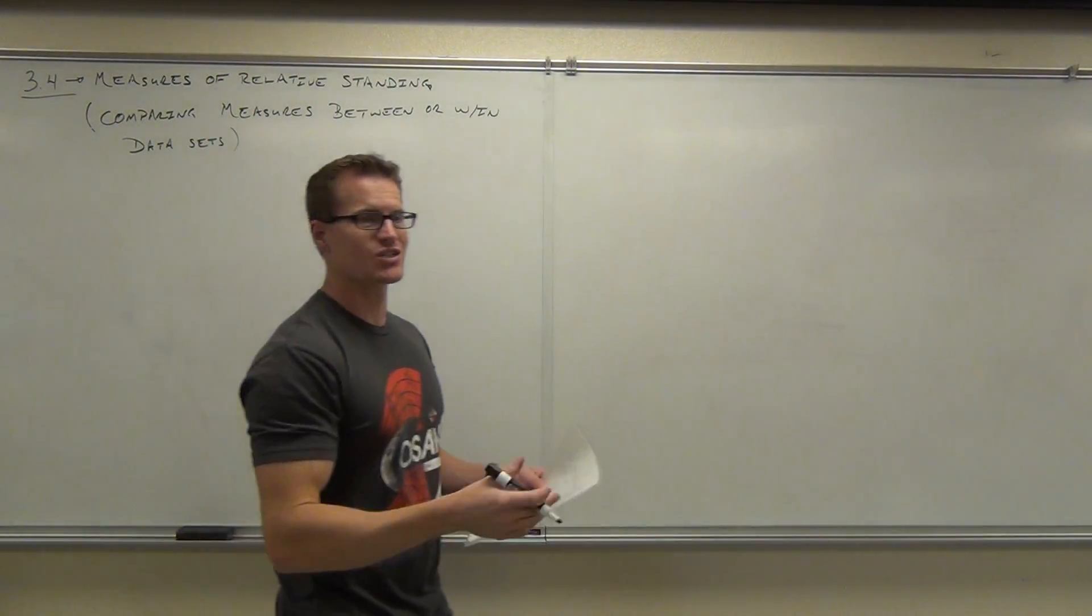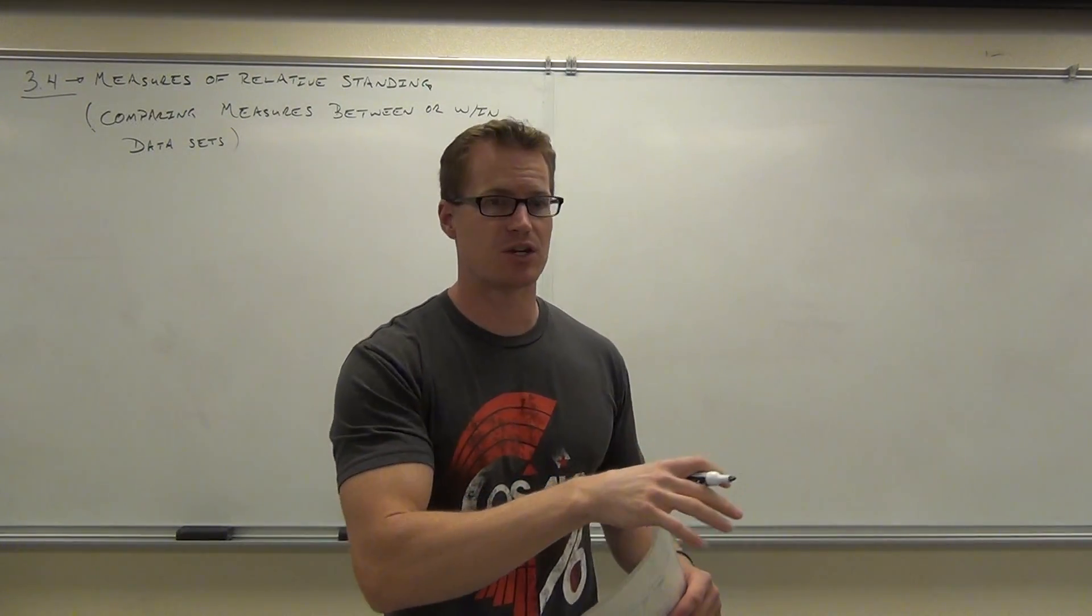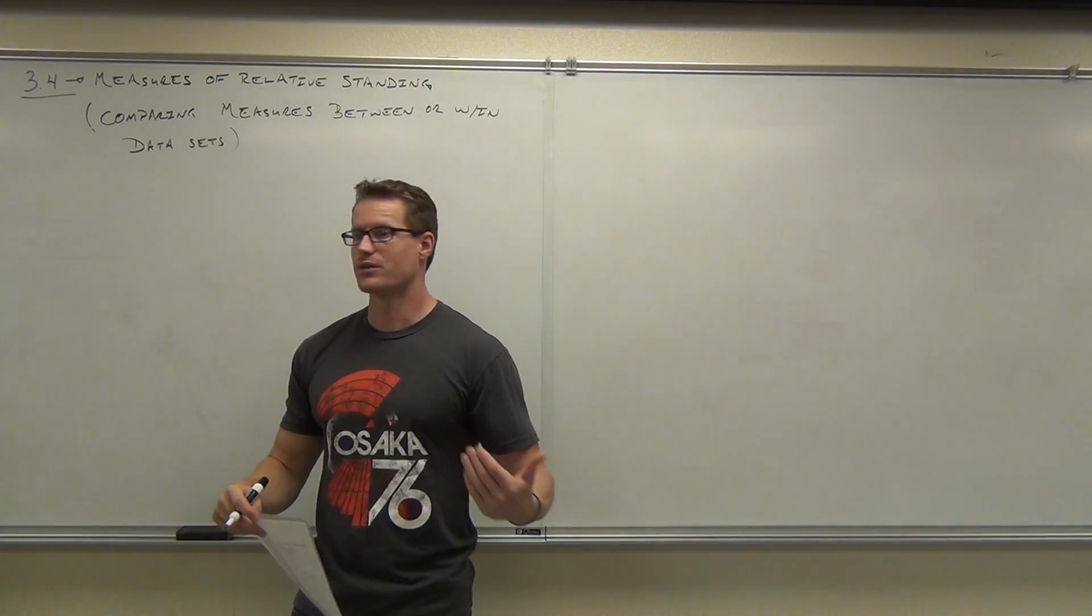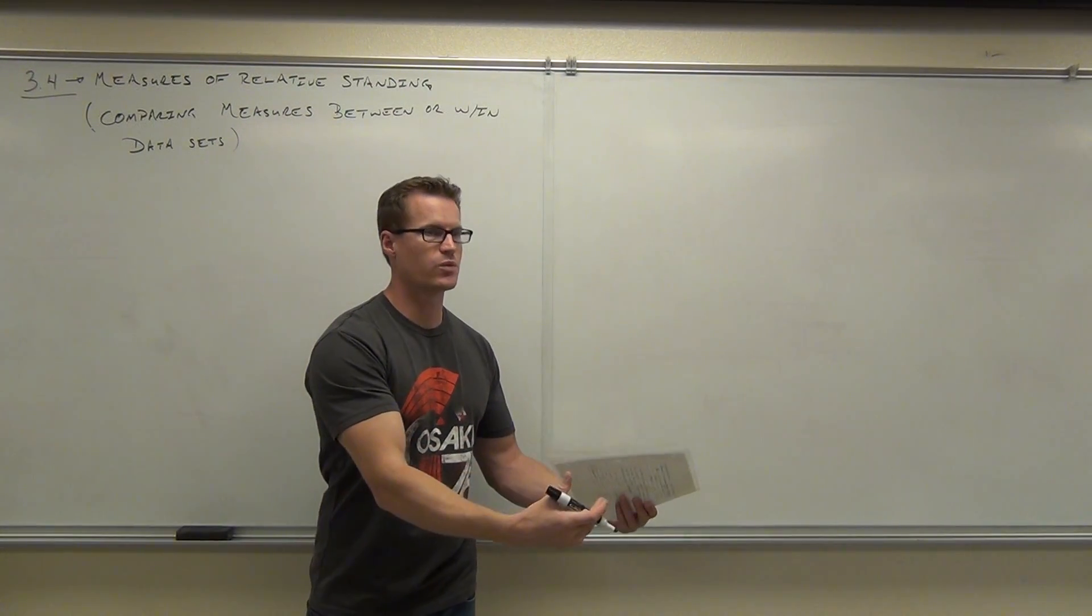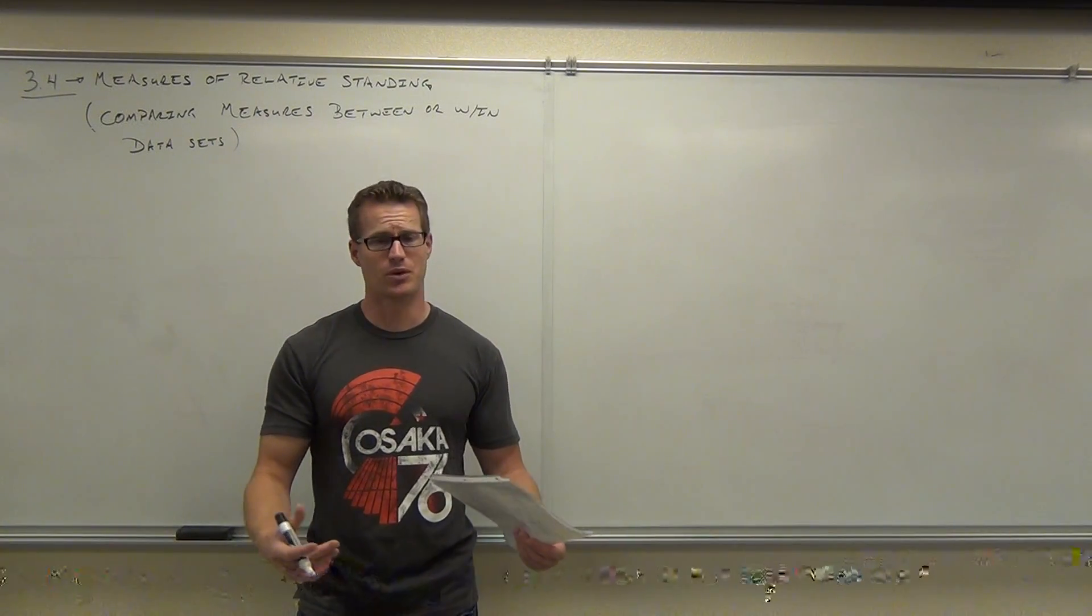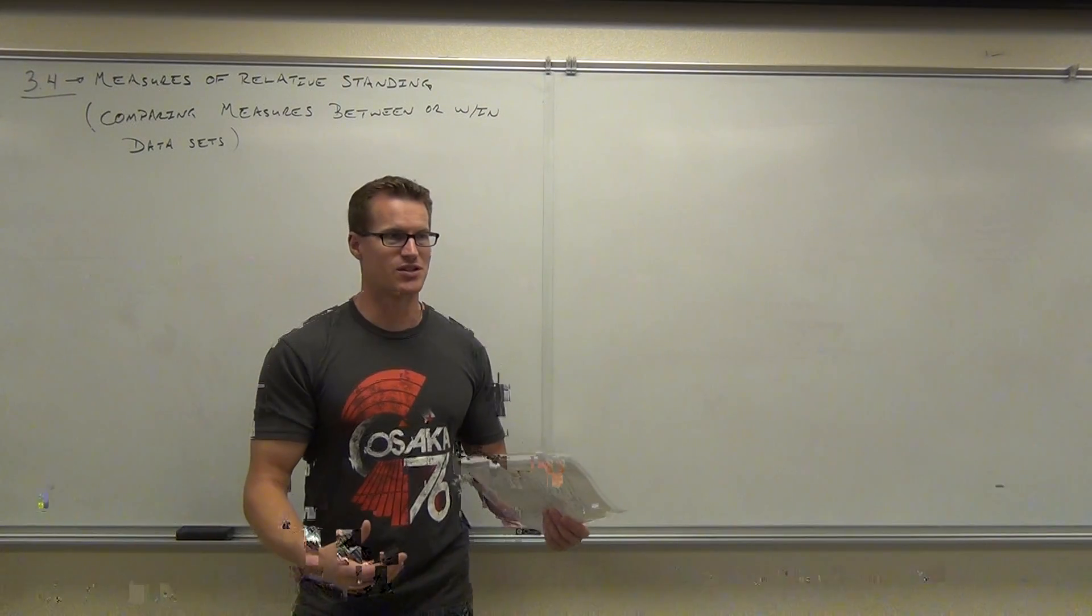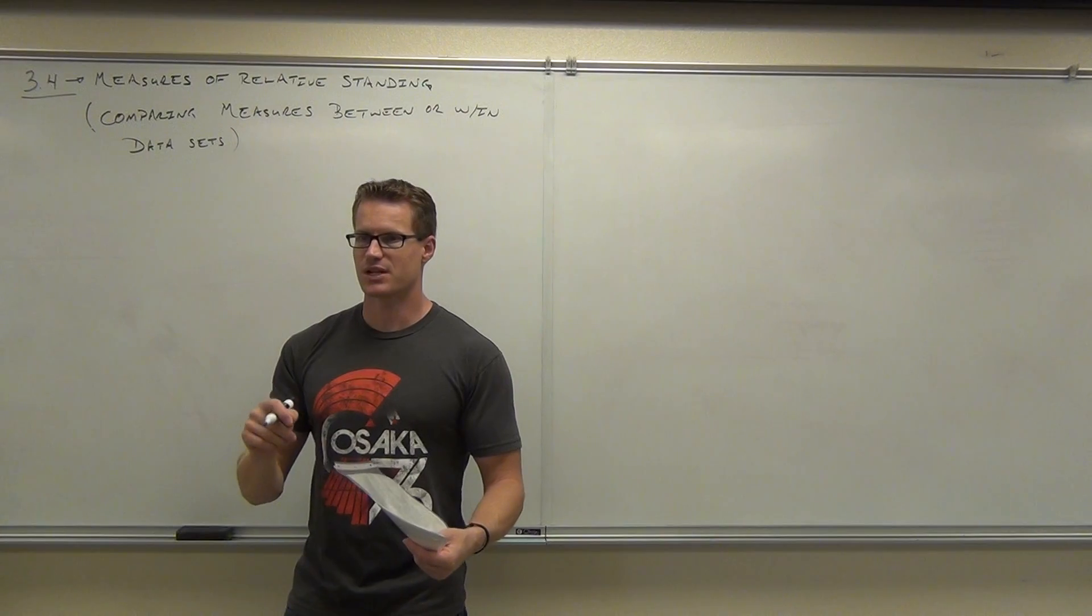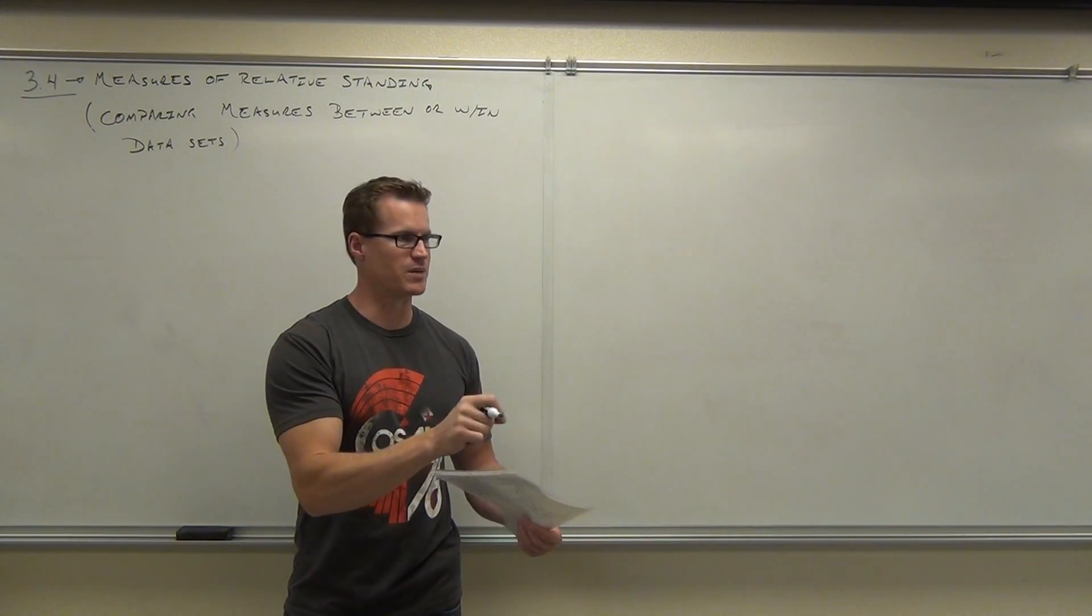To use this we calculate what's called the z-score. This is going to look really familiar because I already previewed this information. The last time we did this we actually calculated the z-score, I just didn't call it the z-score. I said let's find out how many standard deviations away from the mean we are. That idea is a z-score.